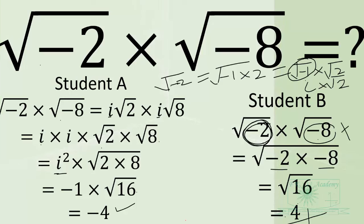What went wrong for Student B was that he treated the numbers here as real numbers, meanwhile they are complex numbers.